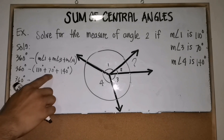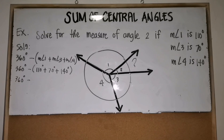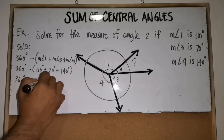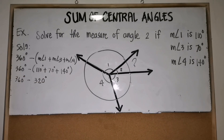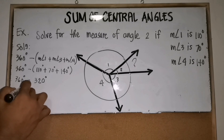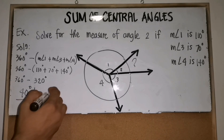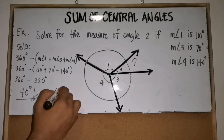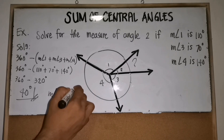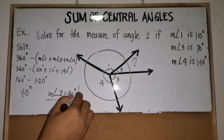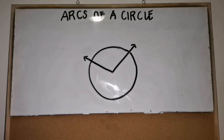So 360 degrees minus (110 + 70 + 140) degrees. That is 360 degrees minus 320 degrees, which is equal to 40 degrees. So the measure of angle two is 40 degrees.